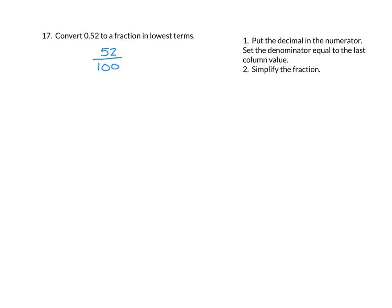We want to simplify. 52 and 100 are both divisible by 2. If we divide 52 by 2, we get 26. 100 divided by 2 is 50. We're not done. We can also divide 26 by 2 and 50 by 2. And if we do that, we end up with 13 over 25. 13 over 25 will be our final answer.